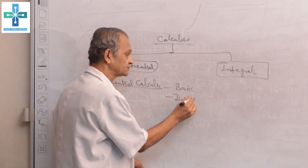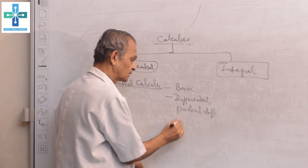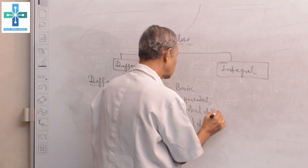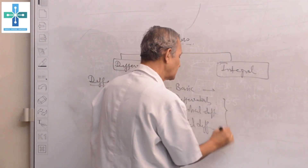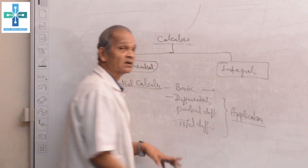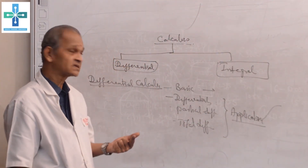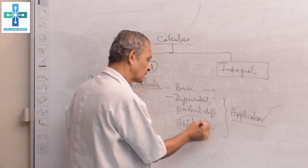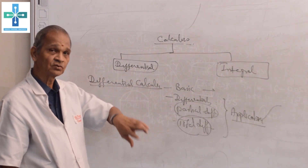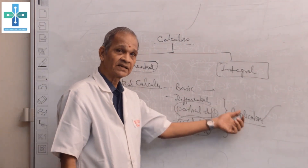In differential calculus we cover differentials, partial differentiation, total differentiation, etc. For all these we have applications. Our applications are mainly with tangents and normals, maxima minima, and errors and approximations. Maxima minima is used even in total derivatives and partial derivatives. That is for one variable, two variables, three variables — more number of variables — we can find those applications.